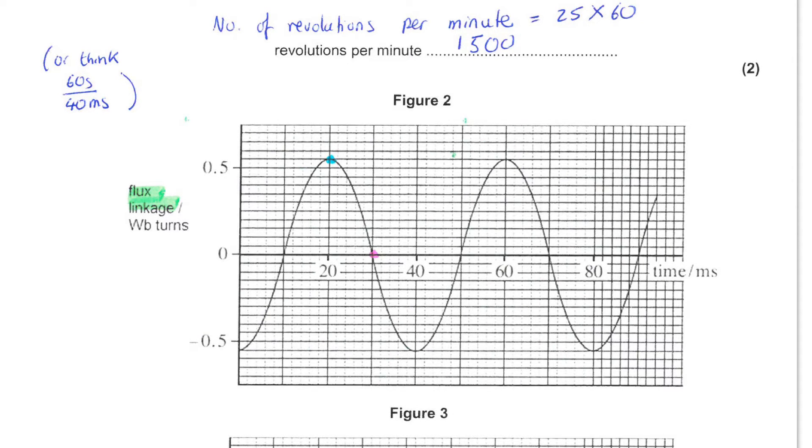Next, you are asked to calculate the number of revolutions per minute. Considering flux linkage and how that changes with time, you can see we have a maximum negative value, a maximum positive, and then maximum negative. This would correspond to one rotation of the coil, as the magnitude of the flux linkage is a maximum twice, but the direction depends on which way the coil is facing. The time period for this rotation is 40 milliseconds. The frequency will be the reciprocal of the time period, which gives us 25 hertz.